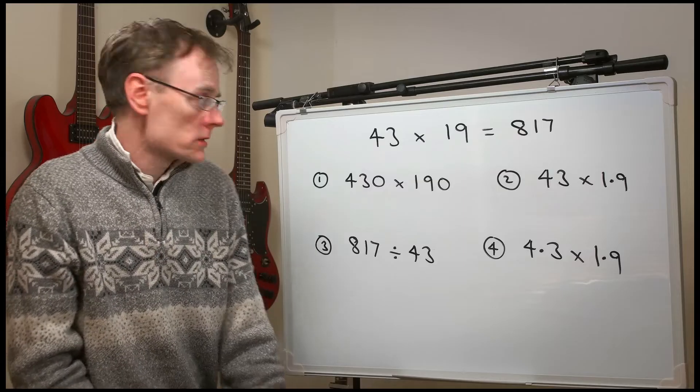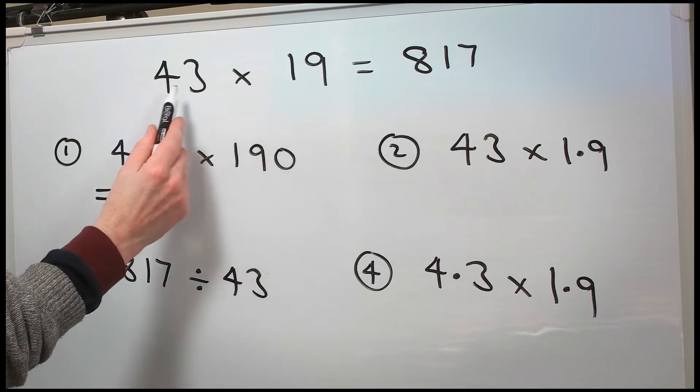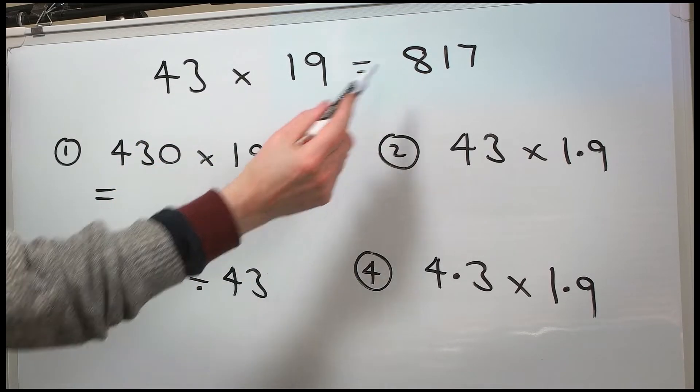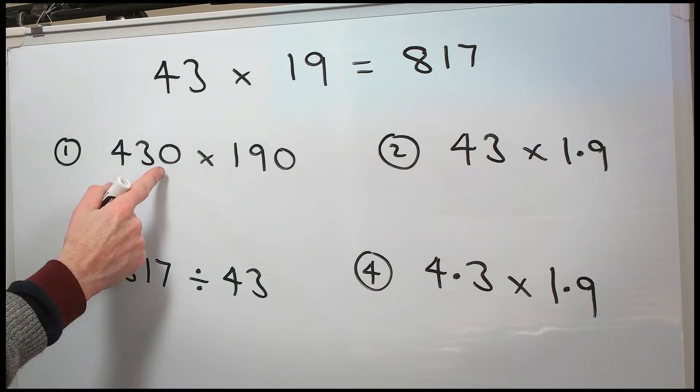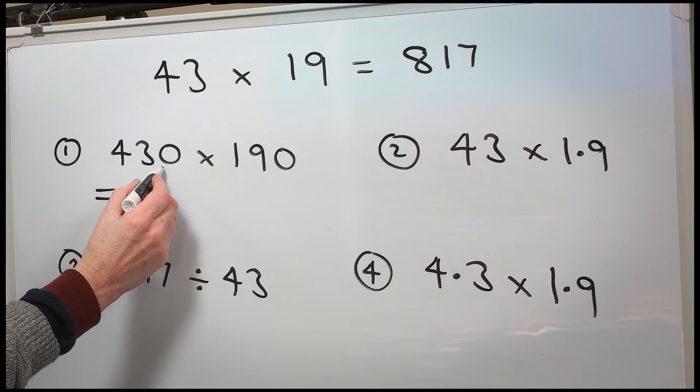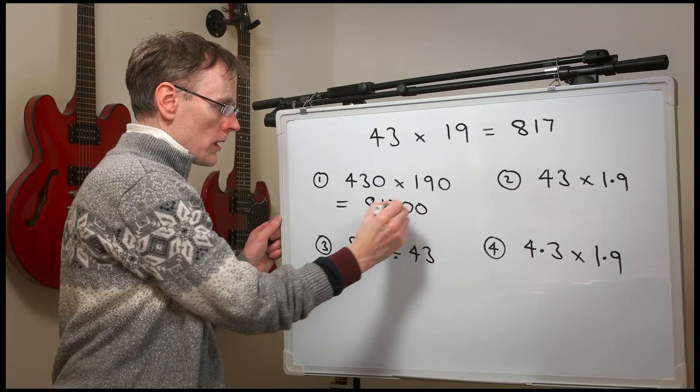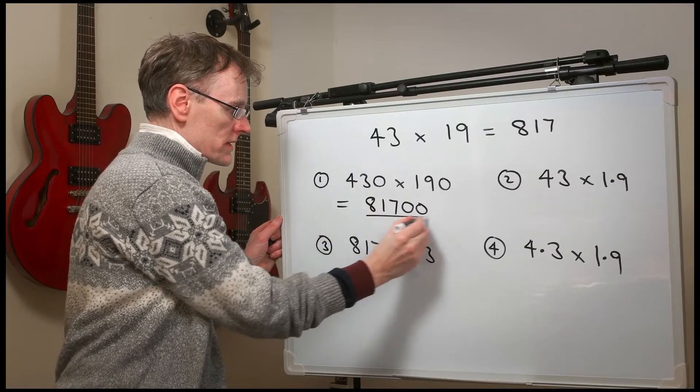So the answers. Number one. This one is much bigger. 43 times 19 is 817. 430 times 190. This must be 10, 100 times bigger. So that's 81,700.